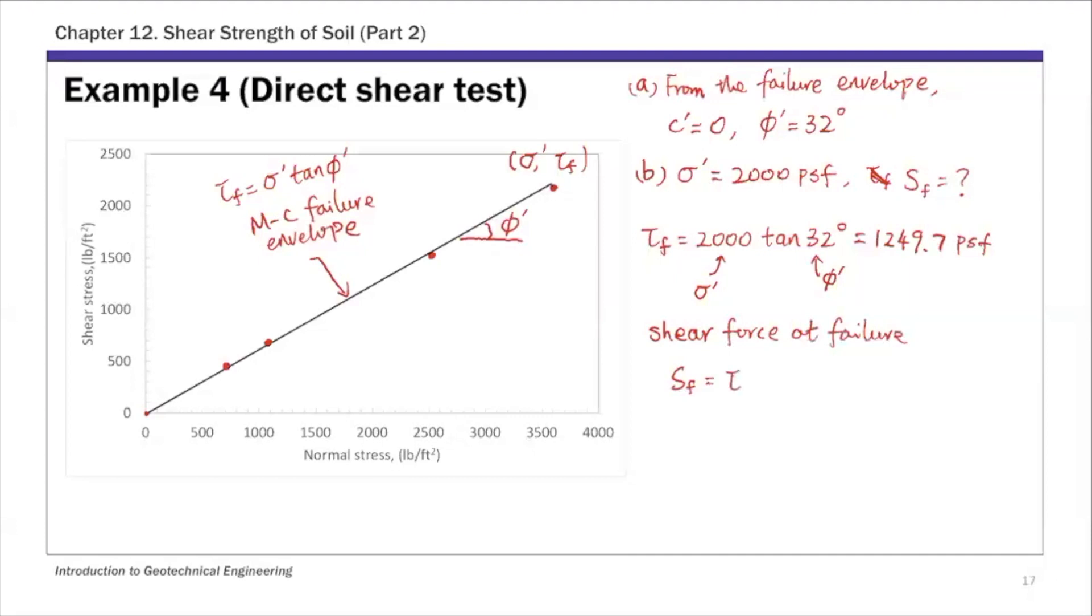Cross-sectional area A we calculated from part one, so this is 1249.7 times 0.0278 square feet, and that's 34.7 pounds. That's the shear force required to fail the specimen at a normal stress of 2000 PSF.